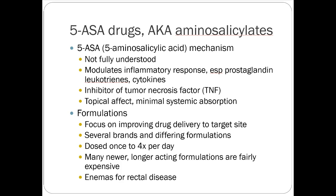5-ASA drugs — amino salicylates — are kind of like aspirin analogues. They probably decrease the inflammatory response and modulate how the immune system responds within the GI tract. Theoretically they don't absorb systemically. They require specific GI flora to cleave them into the active component, which usually doesn't happen in the small intestine — they're really only useful in the large bowel. Since about 80% of Crohn's patients have small bowel involvement, this makes 5-ASA drugs look even less important for Crohn's.